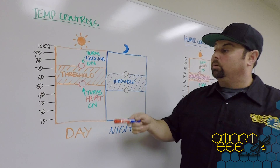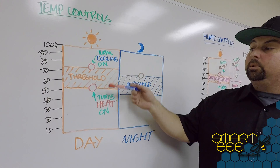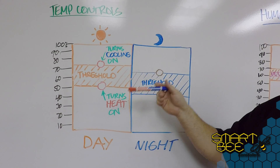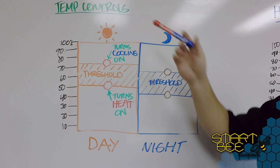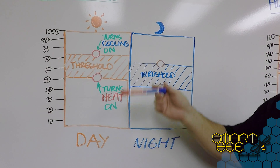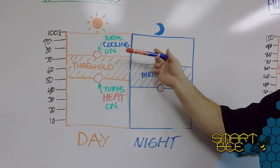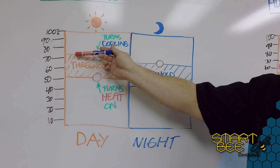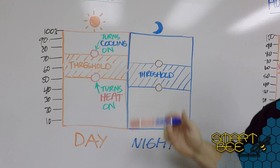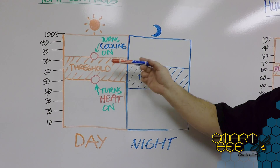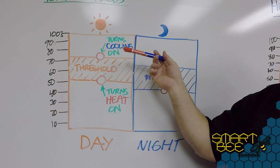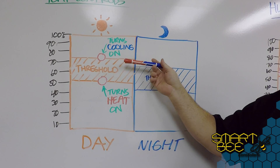A threshold is an acceptable level by which you want to maintain a particular aspect of your room. In this case, this is the temperature control setting on our user interface, and the threshold is defined at 72, 73, somewhere here down to about 50. The threshold is the buffer zone in which your hive wants to maintain the room.